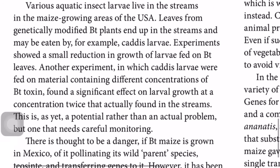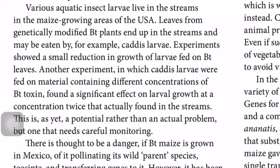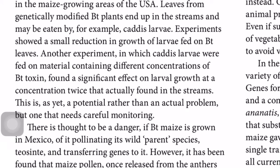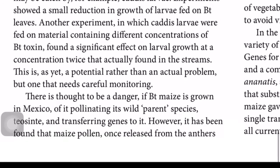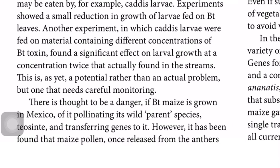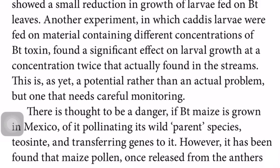Various aquatic insect larvae live in streams of maize-growing areas of the USA. Leaf fragments from genetically modified Bt plants end up in the streams. An experiment showed a small reduction in growth of caddisfly larvae fed on Bt maize leaves. Another experiment feeding caddisfly larvae on materials with different Bt concentrations found no significant effect on larval growth at concentrations twice that already found in streams. This is a potential rather than actual problem, but requires careful monitoring.